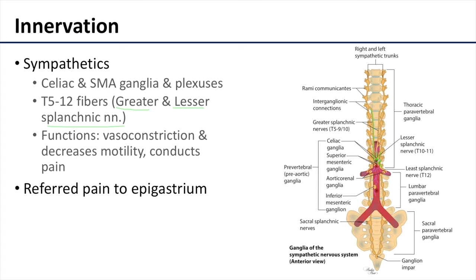When active, the sympathetics encourage vasoconstriction and decreased motility of the gut, and also conduct the visceral afferent fibers — the visceral pain fibers, which your brain interprets as pain. This referred pain is felt in the epigastrium.